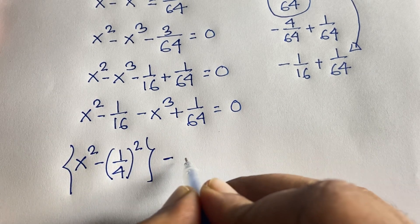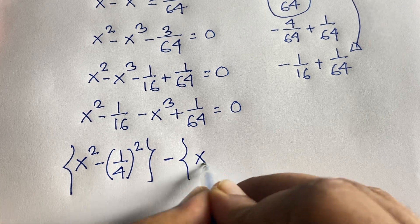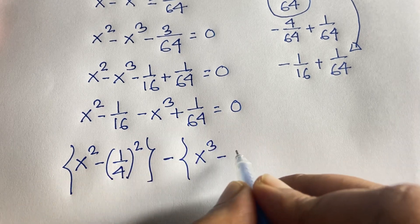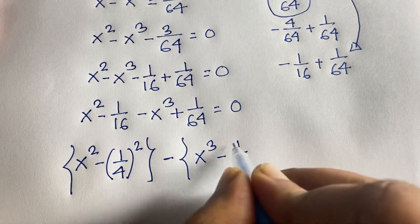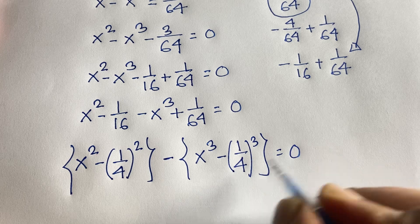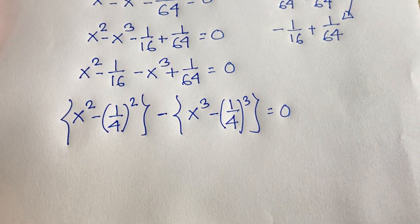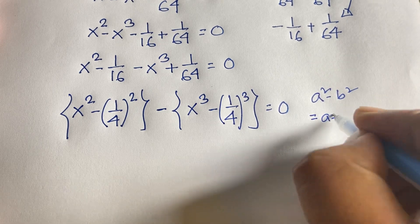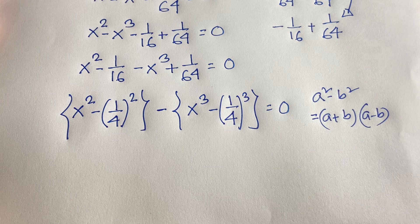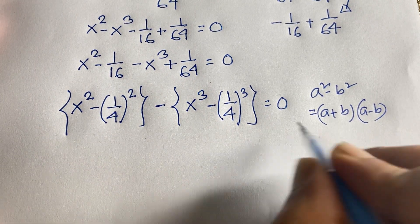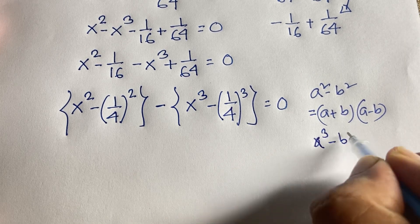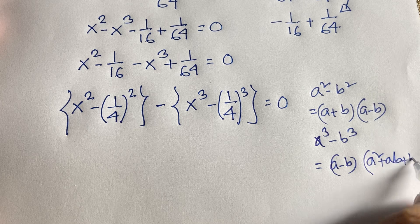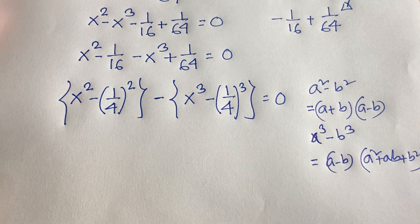The minus sign is factored out, so minus x cubed plus 1 over 64 becomes minus (x cubed minus 1 over 64). Note that 1 over 64 equals (1 over 4) cubed since 4 cubed is 64. I'll apply two identities: a squared minus b squared equals (a plus b)(a minus b), and a cubed minus b cubed equals (a minus b)(a squared plus ab plus b squared).